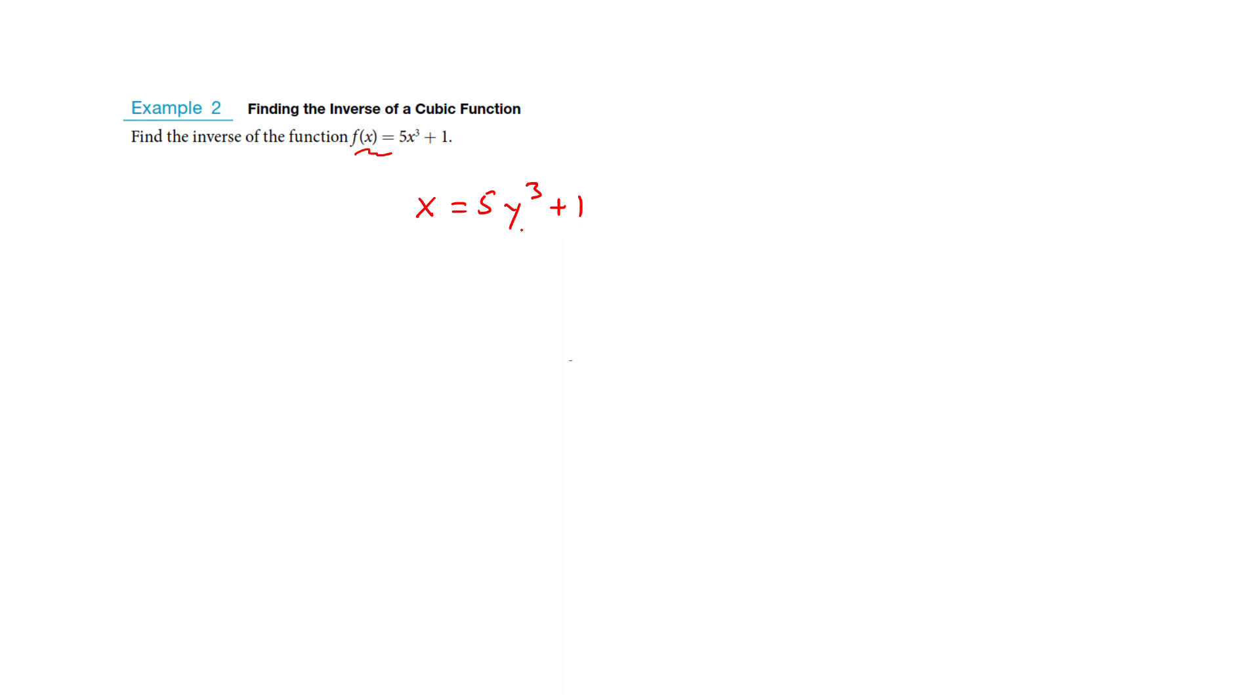Now, what we're going to do is we're going to solve for y. So if I were trying to get this alone, remember you'd follow all the normal rules. The 1 is going to leave, then we're going to divide by 5. So do you see I'd have x minus 1.